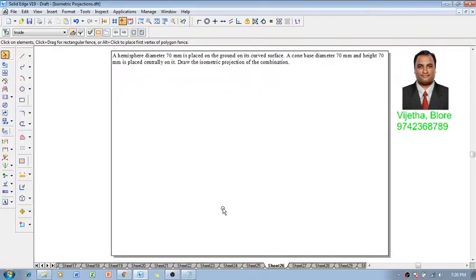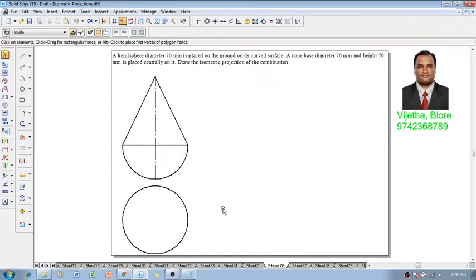According to this, we have to locate a cone on a hemisphere. According to the given condition, the orthographic position is going to be drawn like this. First, one has to construct the hemisphere position, and then we have to construct the cone.